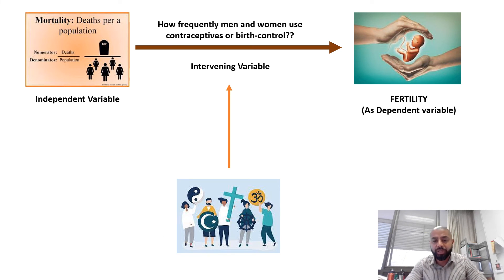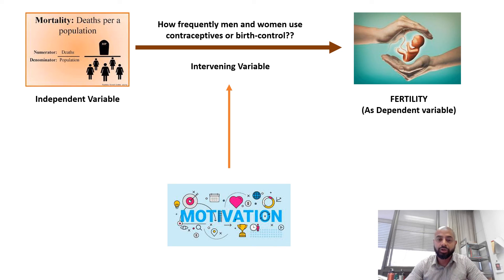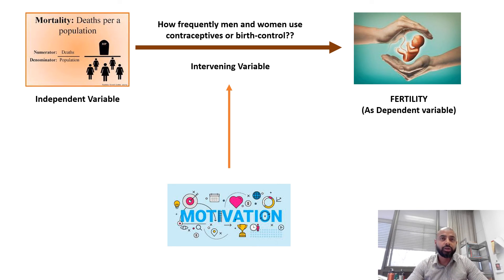Religious beliefs are also an extraneous variable — some religions oppose the use of birth control and contraceptives, and that is the reason people are choosing not to use them, which is why the fertility rate is high. Motivation is another factor: what is the motivation of people choosing to use birth control or not? The motivation could be that the population you are studying has ambitious men and women who are choosing not to have children because they want to focus on their career and not be distracted — not because of contraceptive use, but because of career motivation.